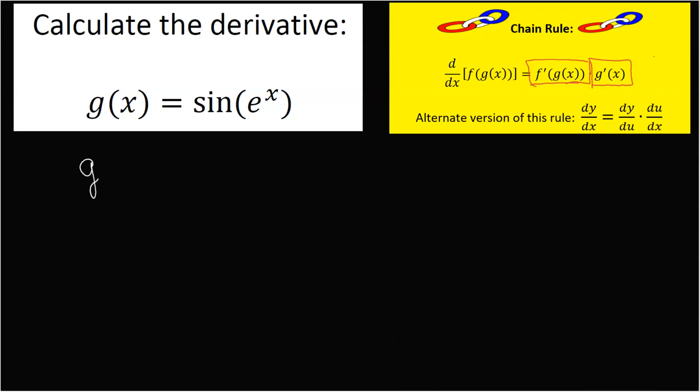Okay, so here we would say the derivative of G is going to equal cosine evaluated at G of x. So the inputs stay the same, which is e to the x, multiplied by the derivative of the inside function, which is e to the x, and that's it.